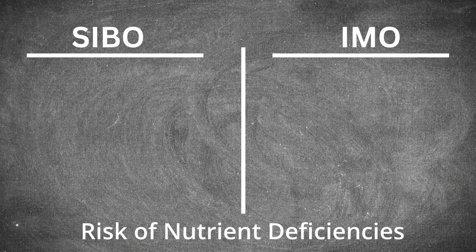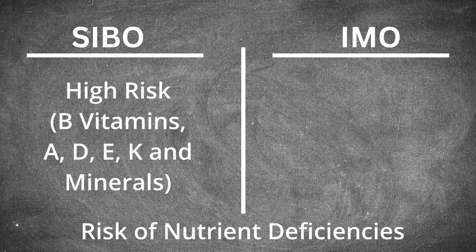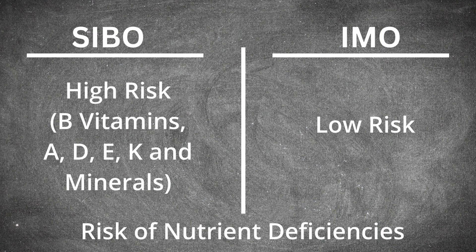There are other effects associated with these conditions — let's talk about the risk of nutrient deficiencies. When it comes to SIBO, the risk is extremely high. These organisms are notorious for stealing nutrients and inhibiting the production of nutrients from our beneficial bacteria, manifesting in B vitamin deficiencies, fat-soluble nutrients like A, D, E, K, mineral deficiencies, and even protein deficiencies. But when you look at IMO, that's not the case — IMO isn't linked to nutrient deficiencies. For example, there hasn't been an observance of B12 deficiency. So in general, the risk of nutrient deficiencies with IMO is significantly less.